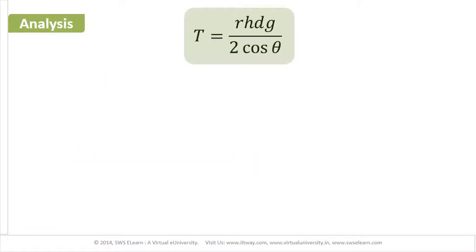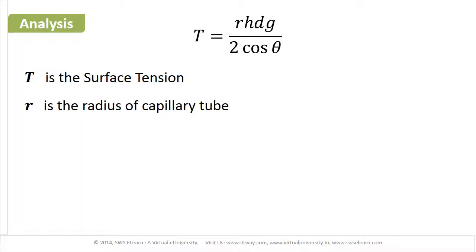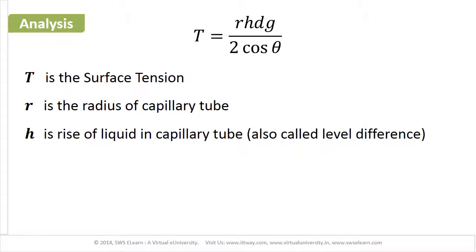In this equation, T is the surface tension, R is the radius of capillary tube, and H is the rise of liquid in capillary tube, also called level difference.